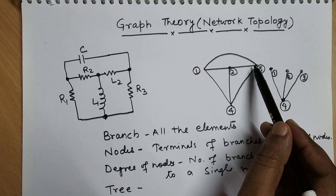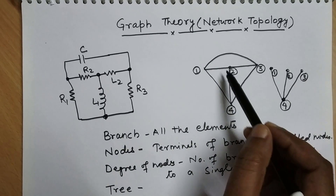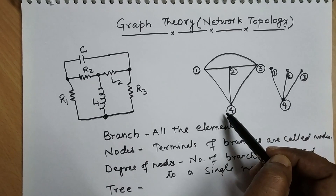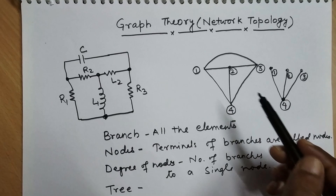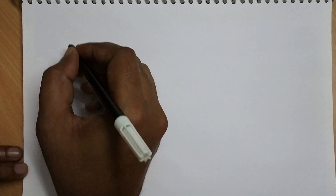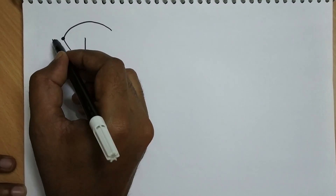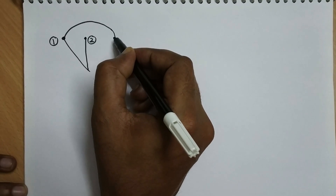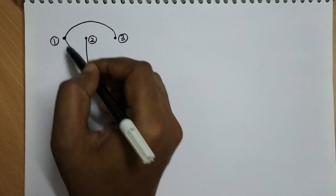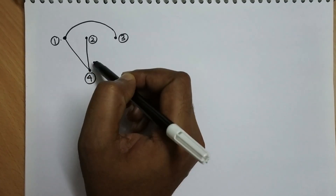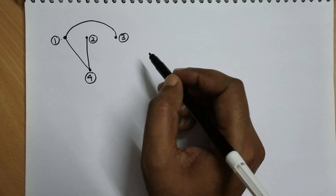A tree can have many combinations for a particular given circuit. For example, one tree uses branches 1-2, 2-4, and 3-2-4. Another tree combination may use branches 1-2-3, 2-4, and 1-2-4. In each case, all nodes are connected to a branch and none of the combinations makes a loop. So this is also a valid tree combination — there are many possible combinations of a tree.